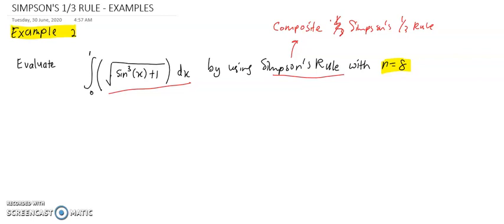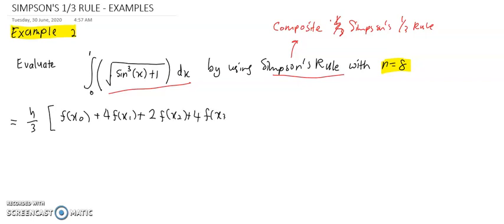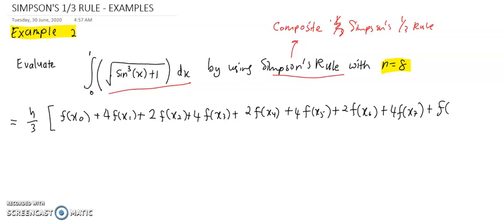Let's write down the formula. The formula to compute the integral with n equals 8 is h over 3, multiplied by f(x0) — the first term always has coefficient 1 — plus 4f(x1) plus 2f(x2) plus 4f(x3) plus 2f(x4) plus 4f(x5) plus 2f(x6) plus 4f(x7) plus f(x8). The last term always has coefficient 1.